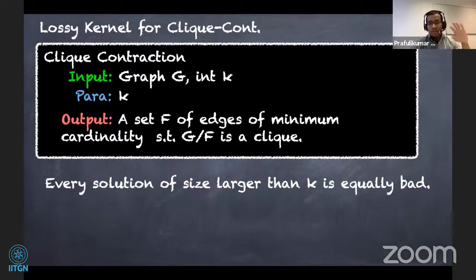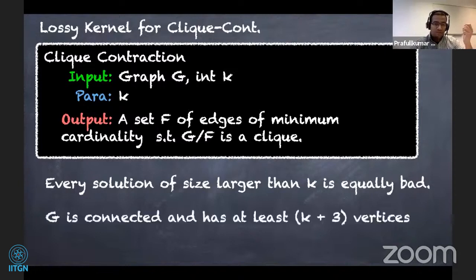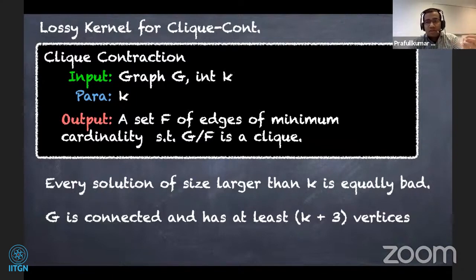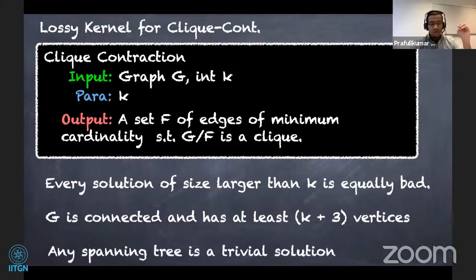We assume G is connected and has at least k + 3 vertices, because if G is not connected, no matter what we do we cannot get it to a clique; also if it has at most k + 3 vertices it's a very small instance and we can just return the same as our kernel. With these two assumptions we can justify that any spanning tree is a trivial solution. If we can somehow conclude any solution is of size at least k, we just return any spanning tree.